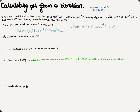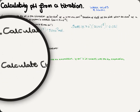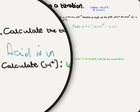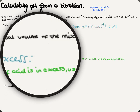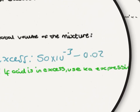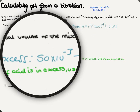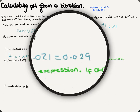Working out what's in excess: subtract one from the other — if you get a negative, flip the subtraction. In this case, the acid is again in excess. Excess acid = 50 × 10⁻³ − 0.021 = 0.029 moles. The total volume is 50 + 30 = 80 cm³.